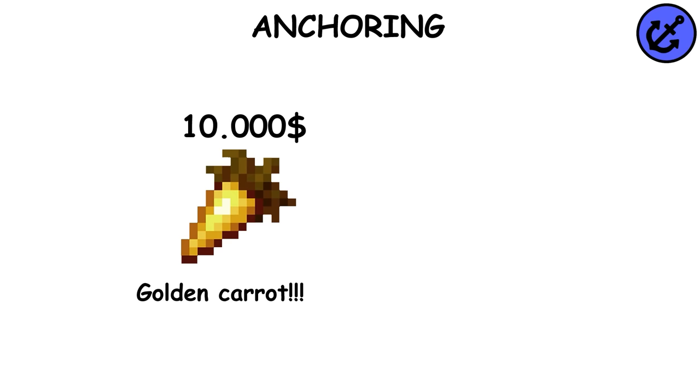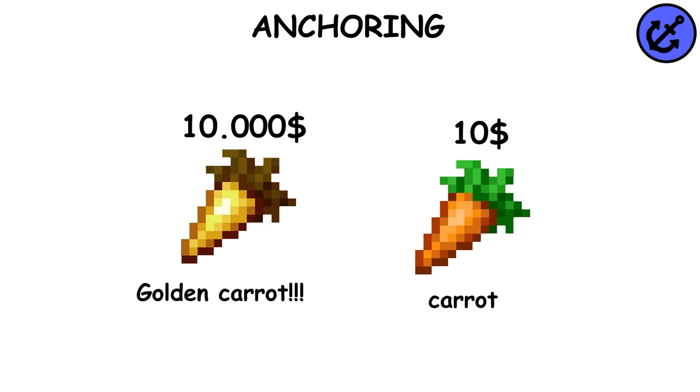Another example of anchoring would be showing an insanely expensive variation of a product and then showing the one the marketer wants to sell, which will have a normal price.